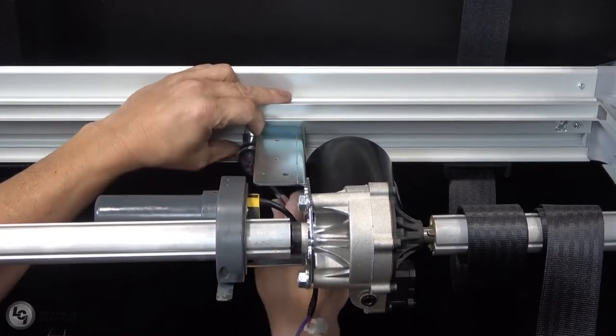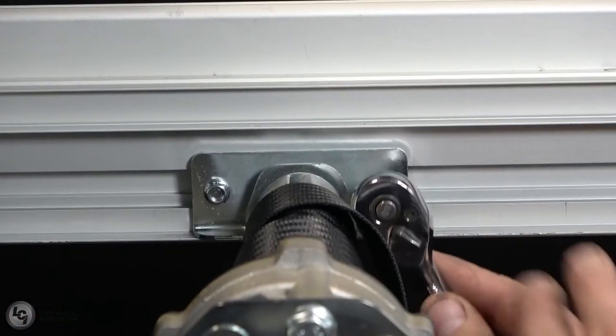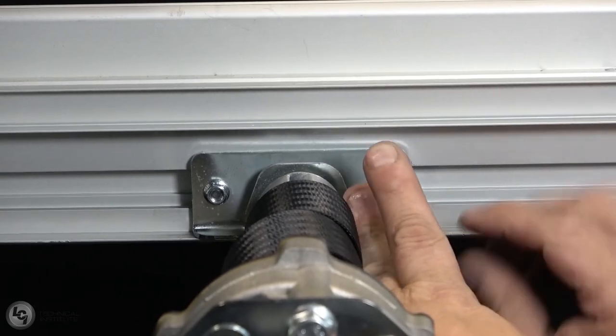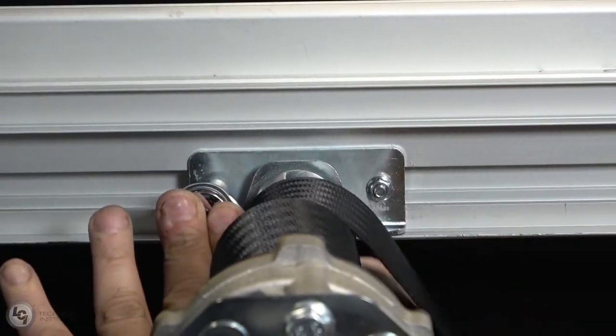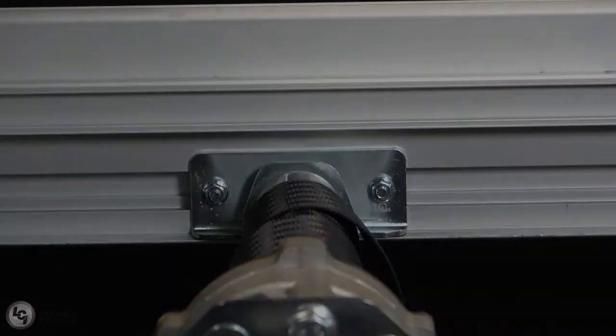With the motor and ACS bracket now secured, we need to ensure our centering brackets are tightened down into their proper positions. Ensure the driveshaft is straight and perpendicular to the ends of the bed frame before you tighten it down.